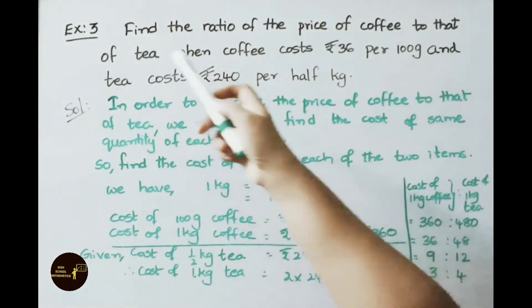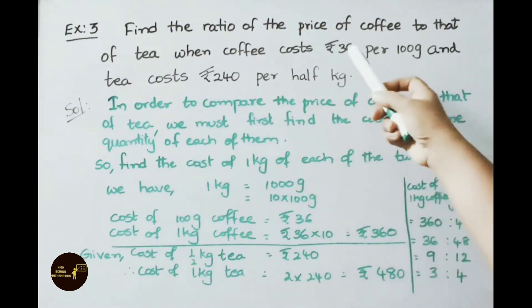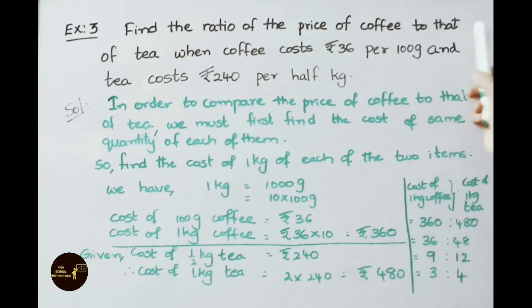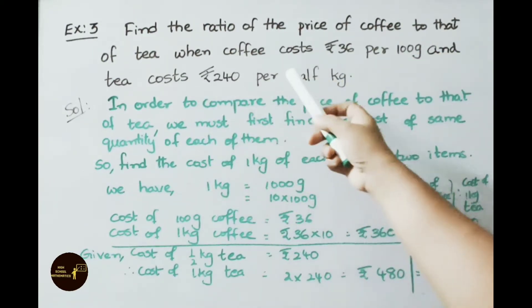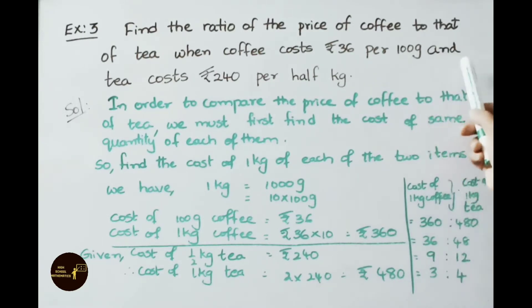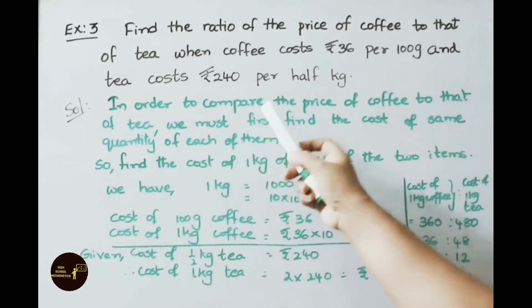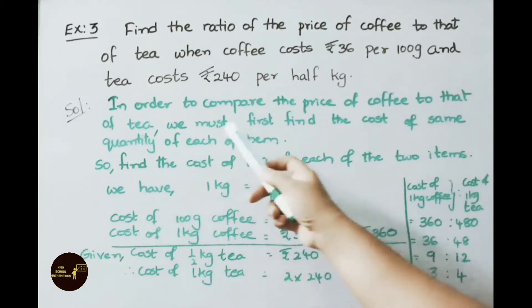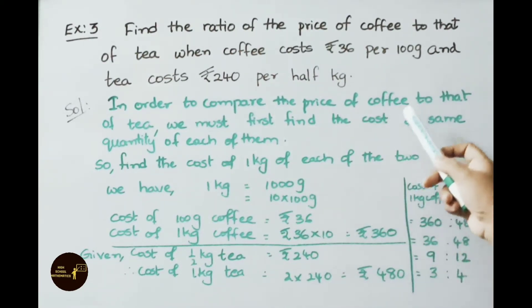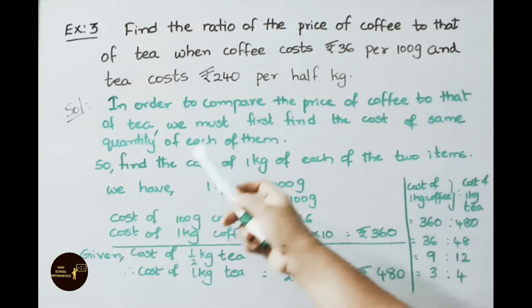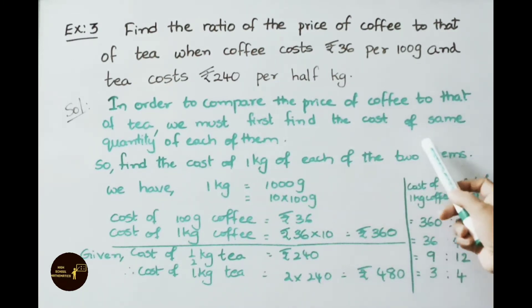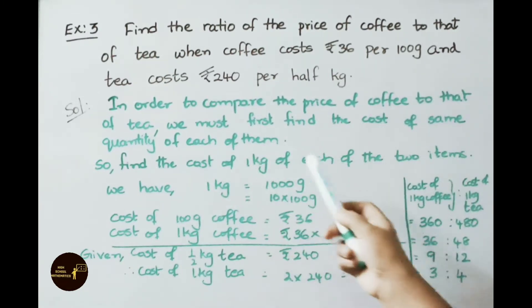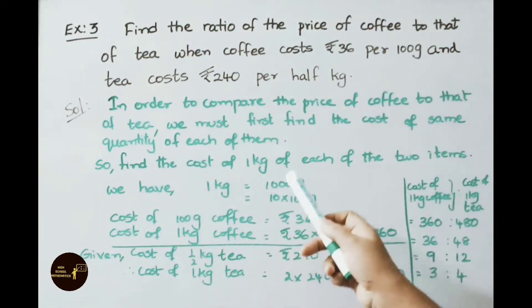See now example 3. Find the ratio of the price of coffee to that of tea when coffee costs 36 rupees per 100 grams and tea costs 240 rupees per half kg. See the solution now. In order to compare the price of coffee to that of tea, we must first find the cost of same quantity of each of them. For that we have to find the cost of 1 kg of each of the two items.